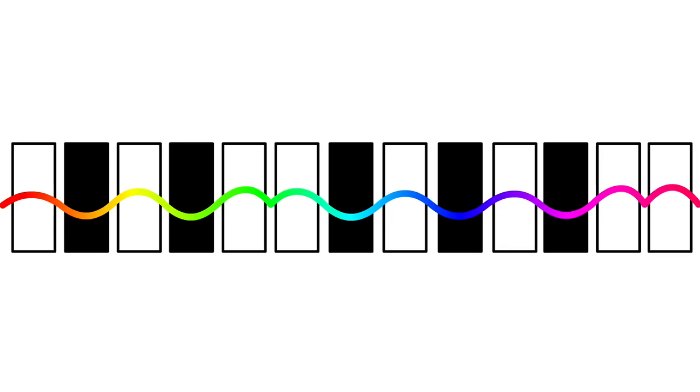If you mapped it on a simple wave graph, it might look like this: up and down, yin and yang, between the white and black keys, except for two places.